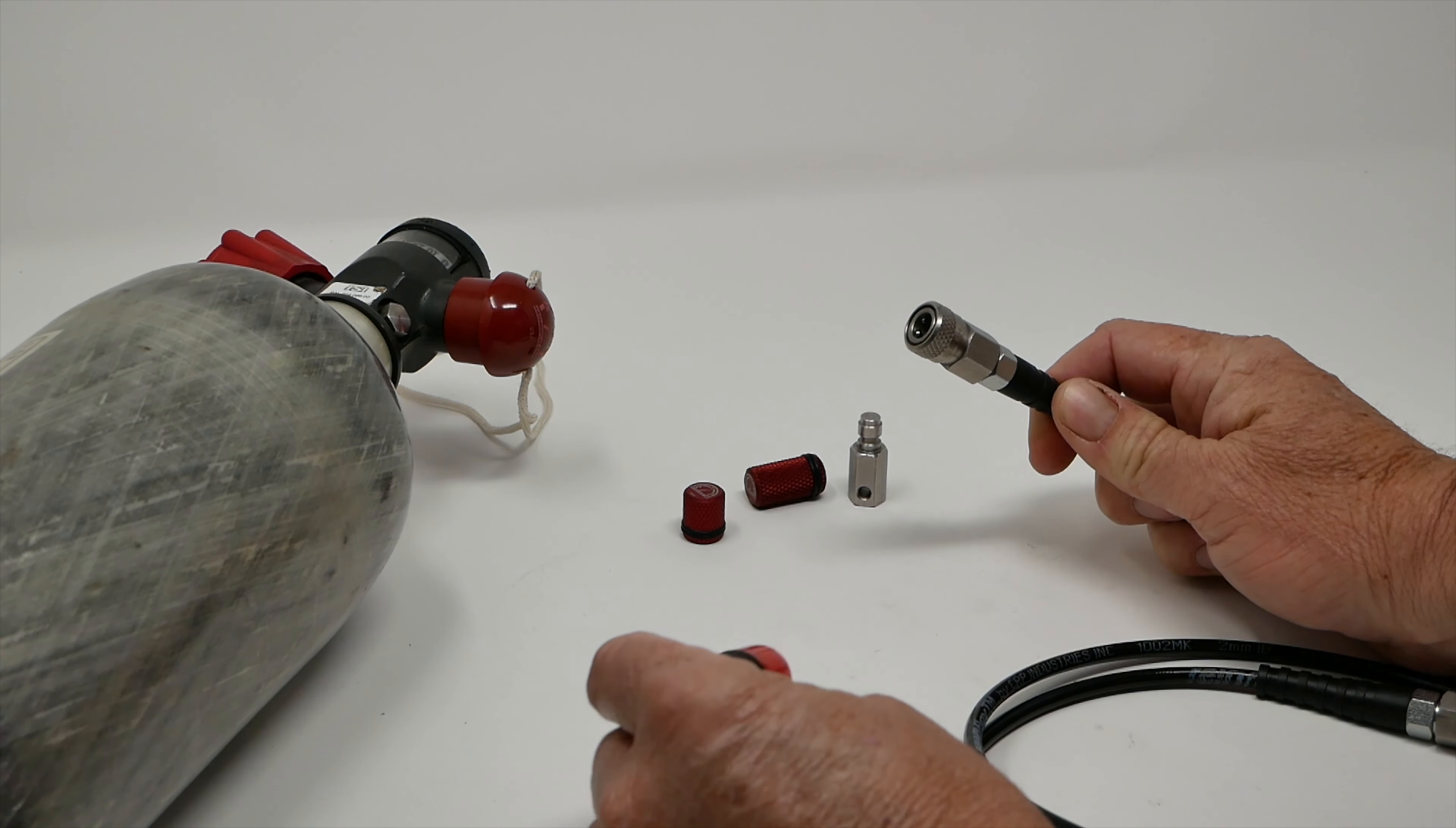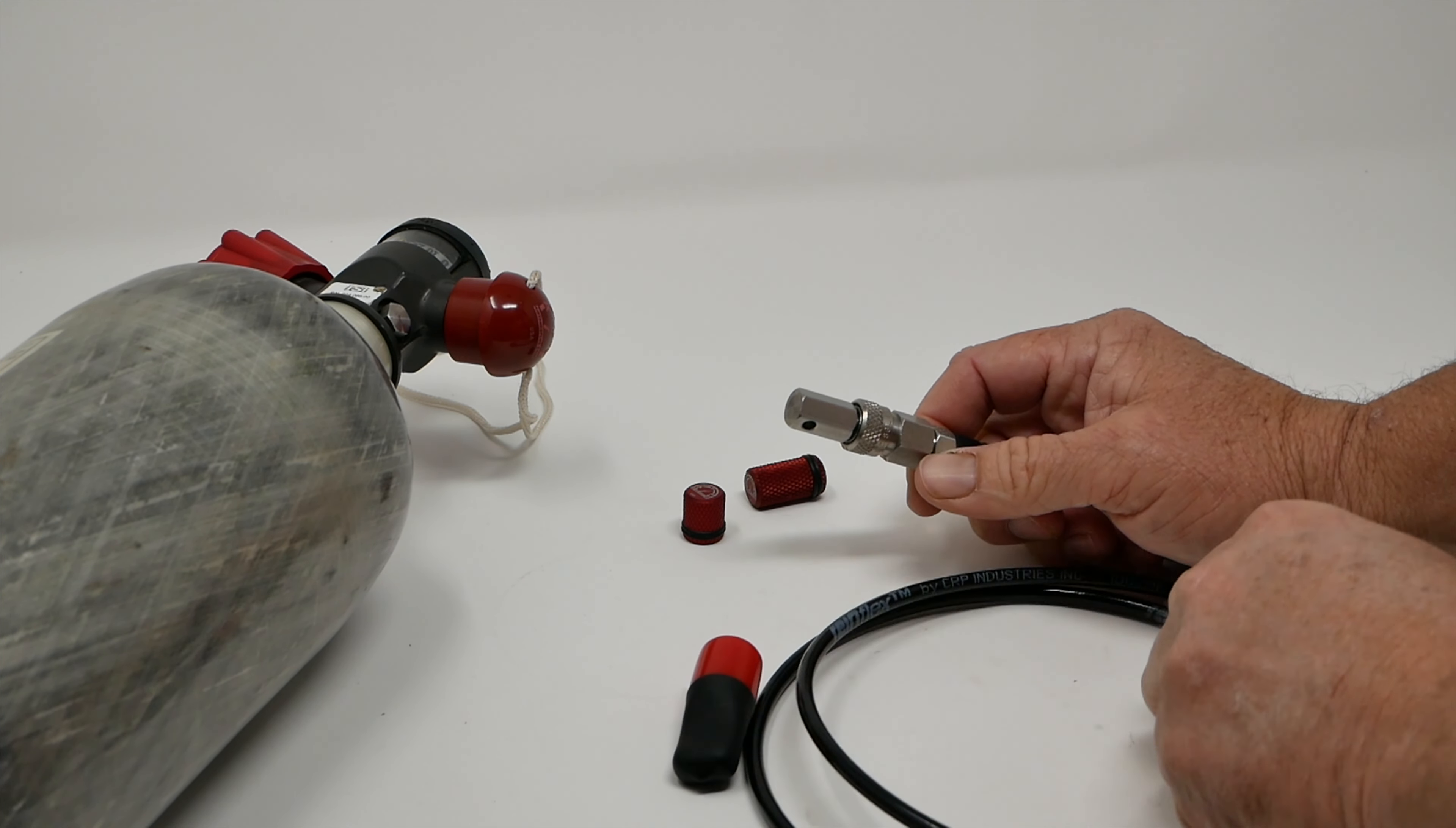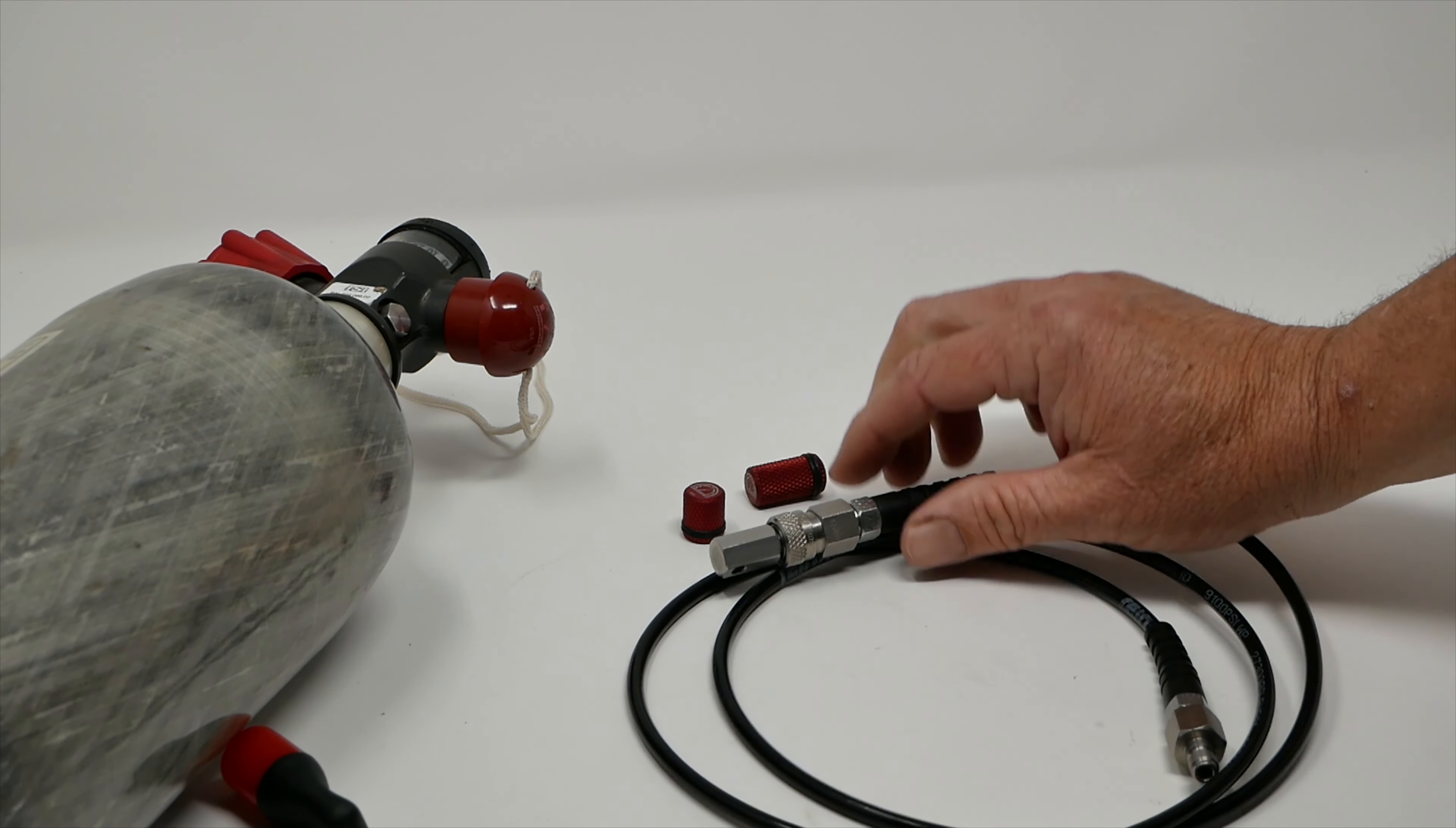You can also use a deadhead to keep the dust out. A deadhead basically just blocks this end off so it does an airtight seal. So you can actually use it to pressure test stuff or if you're trying to read the pressure in your tank through the gauge system, you can put a deadhead on and pressurize it. So those are the fittings we have.